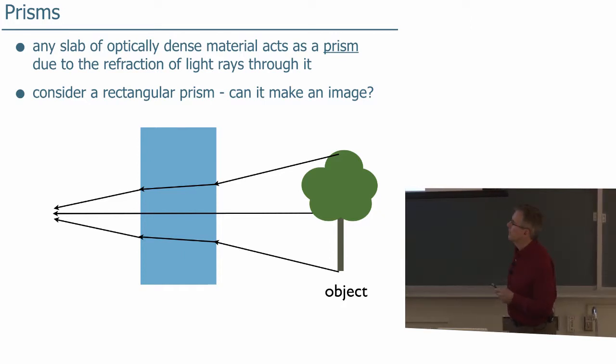So the light coming, let's say, from the bottom of this object is bent according to Snell's law. And then when it emerges, it's bent again parallel to the incoming light but shifted from it in position.